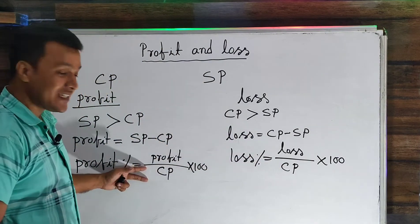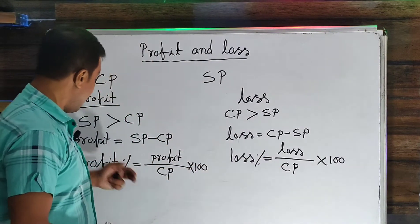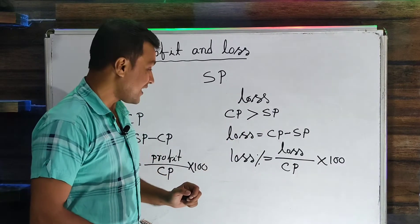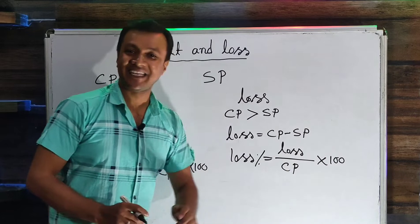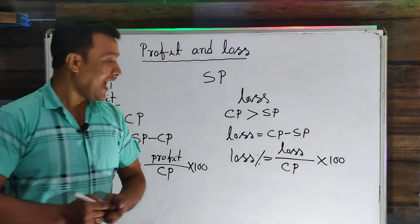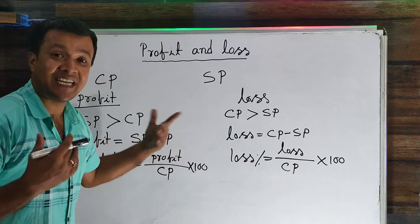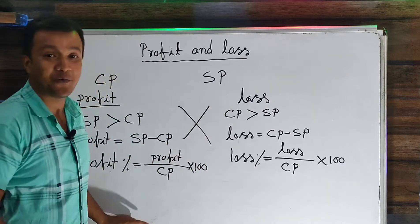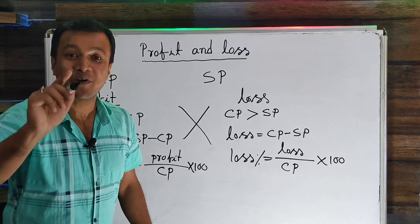The profit and loss percentage is always multiplied by 100. So this is the general concept. Why do you apply the formula? I will apply the shortcut.